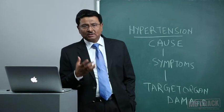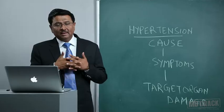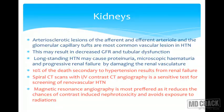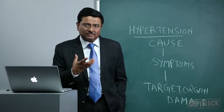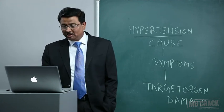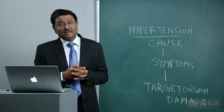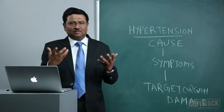Many MCQs have been asked on this: what is the most sensitive test for screening of renal vascular hypertension? If the option given is spiral CT scan with IV contrast CT angiography, that should be selected. However, nowadays magnetic resonance angiography is most preferred because it reduces the chances of contrast-induced nephrotoxicity and avoids exposure to ionizing radiation. So if MRA is an option in the MCQ, that is the most accurate answer as it is the most sensitive test for screening of renal vascular hypertension currently.